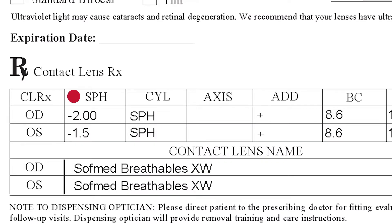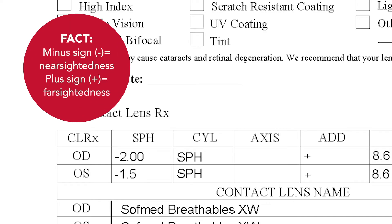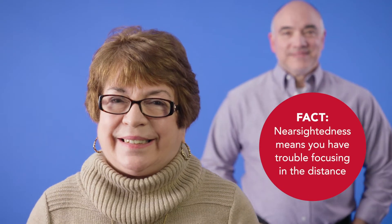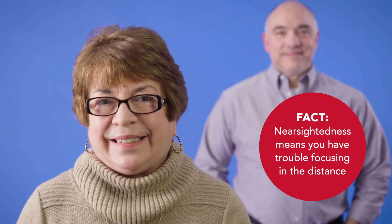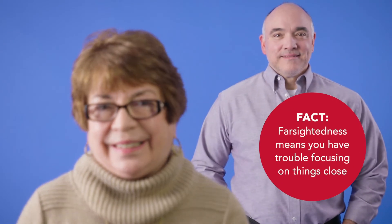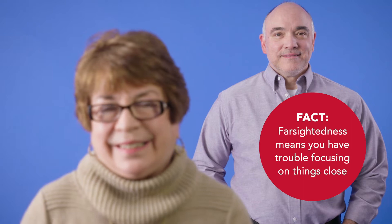Every prescription for contact lenses needs to include a few things to be valid. Power, PWR, or Sphere, SPH — these numbers tell how well you see objects up close and far away in each eye. The minus sign represents nearsightedness, and the plus sign represents farsightedness. Nearsightedness means that you have trouble focusing on things in the distance, and farsightedness means that you have trouble focusing on things close to you.